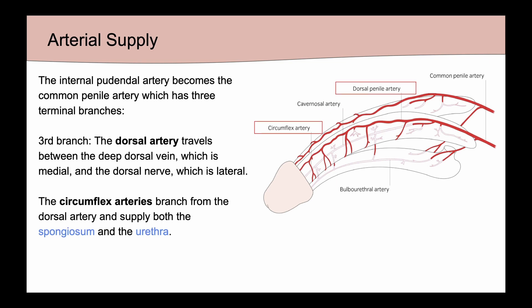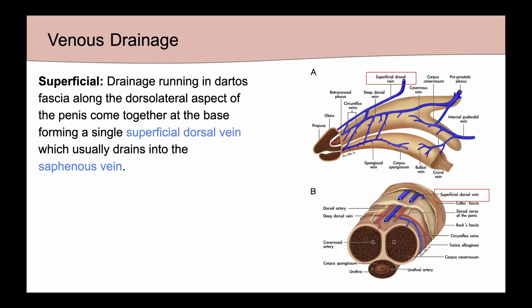The third branch is the dorsal artery, which travels between the deep dorsal vein medially and the dorsal nerve laterally. There are also circumflex arteries which branch from the dorsal artery and also supply the spongiosum and the urethra.